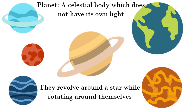Jupiter is the biggest planet of them all. There is also one planet around which there is a ring — a ring-like structure which you can see in the picture — and that planet is Saturn. The rings are very beautiful. Other than Earth, in the remaining seven planets there is no life. There is only life on our planet Earth.